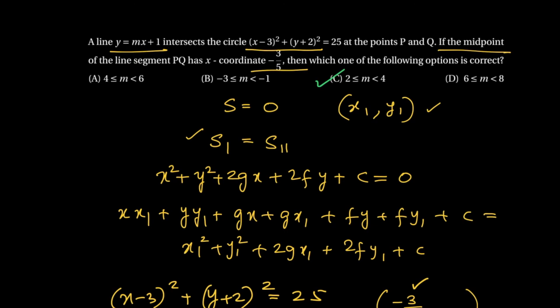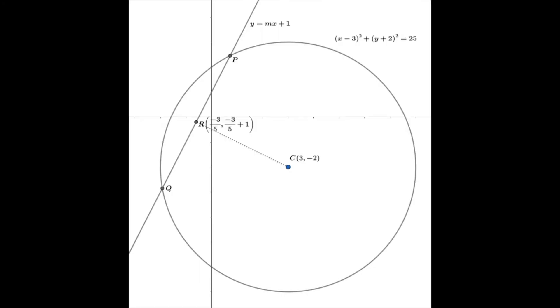There is one more way — an easier way — to do this problem using geometry. I'm going to draw a figure. The circle has center (3, −2). PQ is the line y = mx + 1 and R is the midpoint with coordinates (−3/5, −3m/5 + 1), since it lies on y = mx + 1.